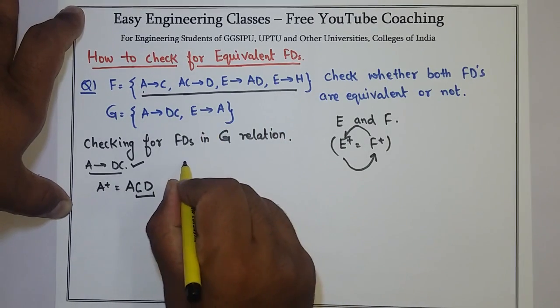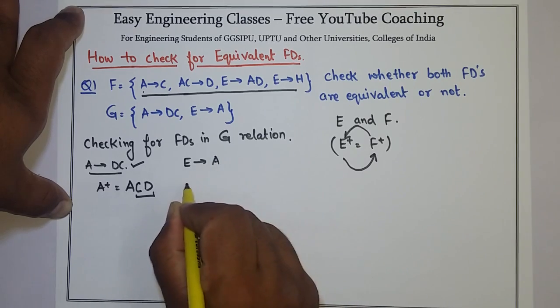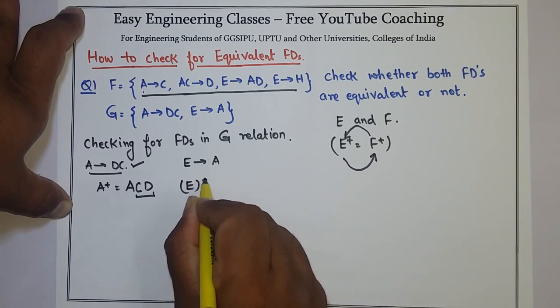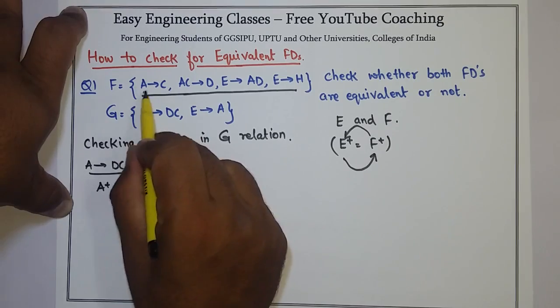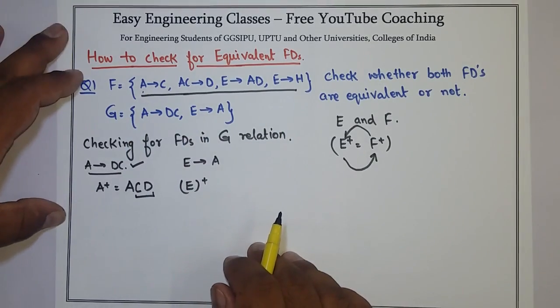Now I will check for second FD, that is E determines A. So calculate E plus with respect to the FDs given in relation F.